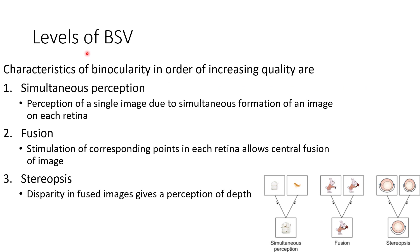Coming to the levels of BSV, there are three levels. The characteristics of binocularity in order of increasing quality are: level 1, simultaneous perception. This is the perception of a single image due to simultaneous formation of an image on each retina.